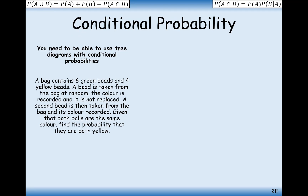Right then, let's crack on with the question. A bag contains six green beads and four yellow beads. A bead is taken from the bag at random, the colour is recorded and it's not replaced. A second bead is then taken from the bag and its colour is recorded. Given that both balls are the same colour, find the probability that they are both yellow. So we've got a 'given that' — the key part for this question is: given that both balls are the same colour, what is the probability that they are both yellow? Let's start by drawing a tree diagram to help us visualise the situation.